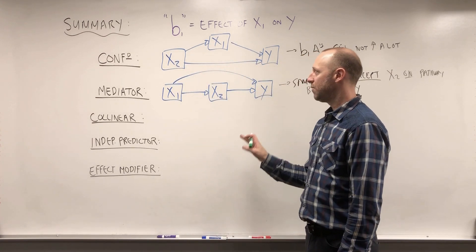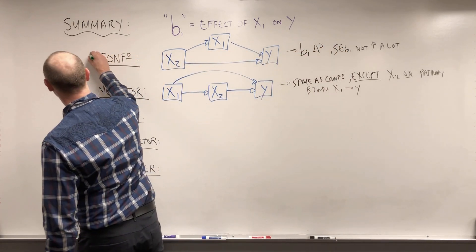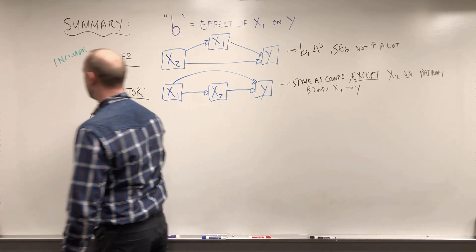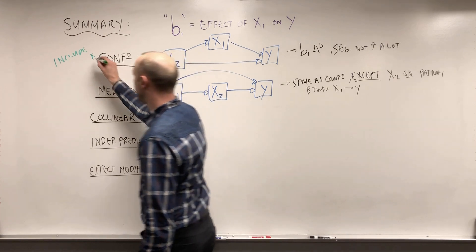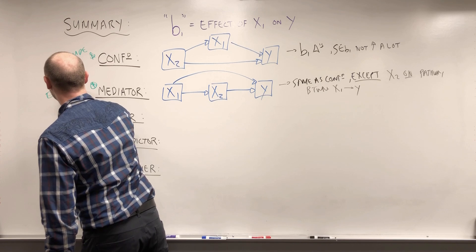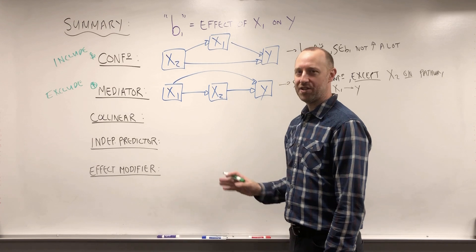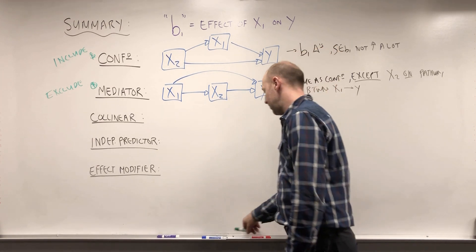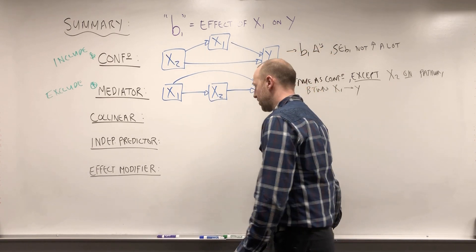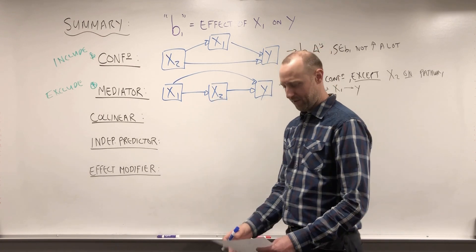And maybe we should note, when building a model to try and estimate the effect of X1 on some outcome Y, confounders, we generally want to include these in the model. So if there's a confounder, we're going to want to include it and adjust for it. Mediators, we're usually going to want to exclude these. And as noted earlier, you can read a bit more about the idea of mediation analysis to get the idea if you want to try and estimate the direct effect, the indirect effect, or the total effect. So we're going to lean towards excluding them to estimate the total effect.